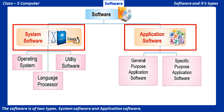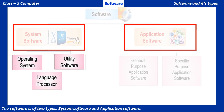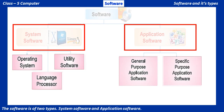The software is of two types: system software and application software. System software is further divided into three types: operating system, utility software, and language processor. And the types of application software are general purpose application software and specific purpose application software.